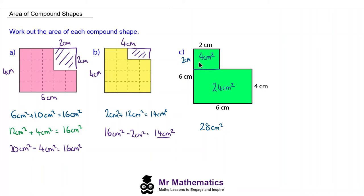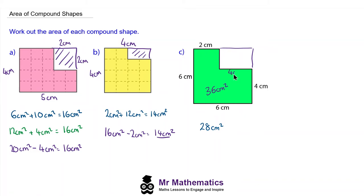And again I'm going to check this using a different approach. We could think of it as a larger square which is six by six, so 36 centimeters squared, take away this rectangle here. We know this length is six and this one is two, so this must be four centimeters. And this is six and this is four, so this one must now be two centimeters — so eight centimeters squared. This gives us 36 centimeters squared take away eight, which gives us 28 centimeters squared.